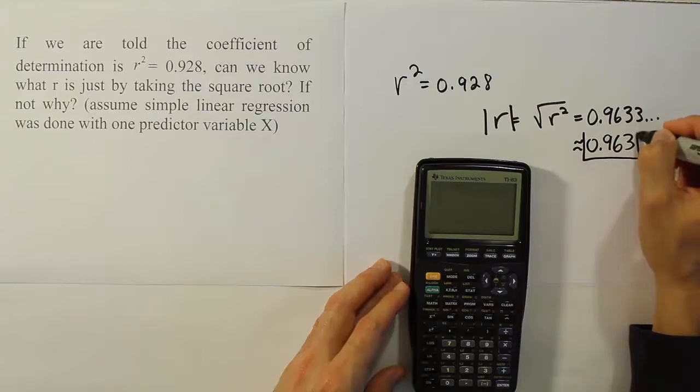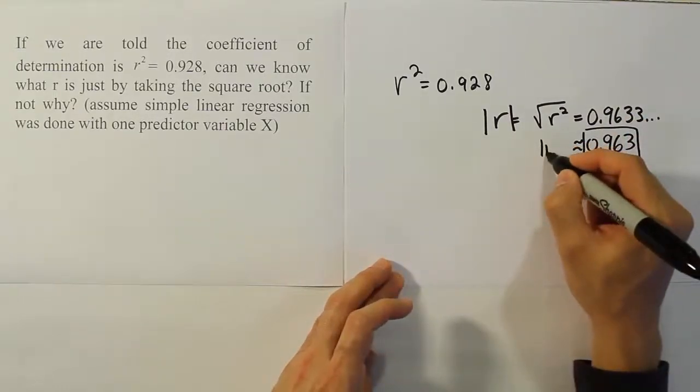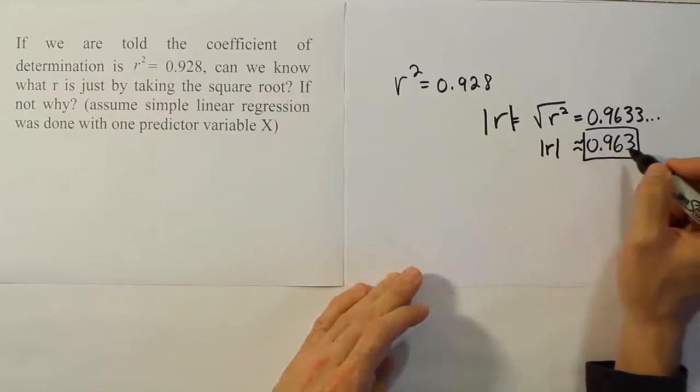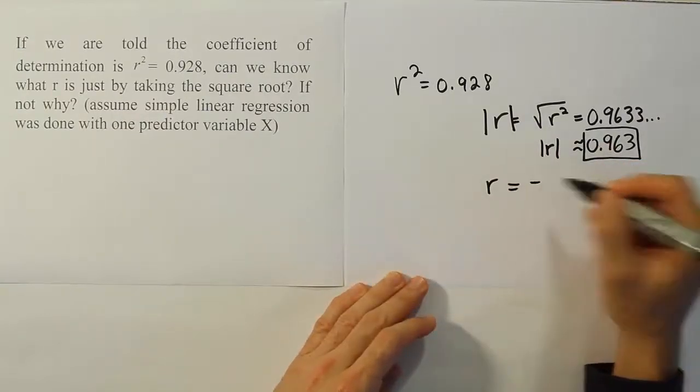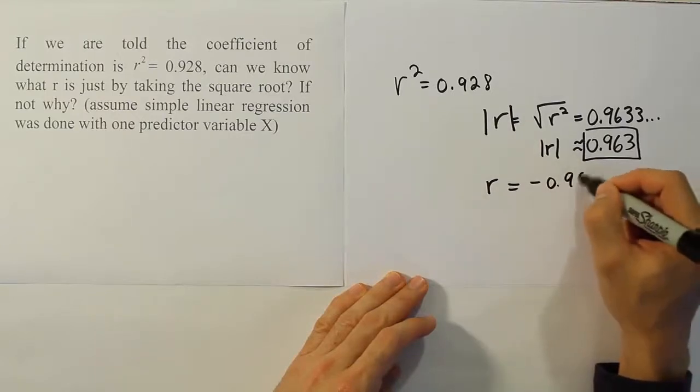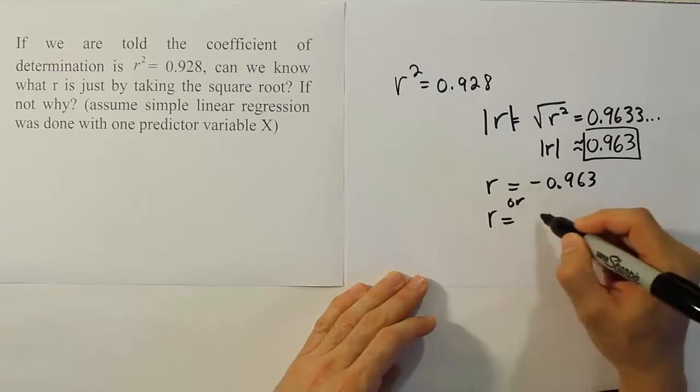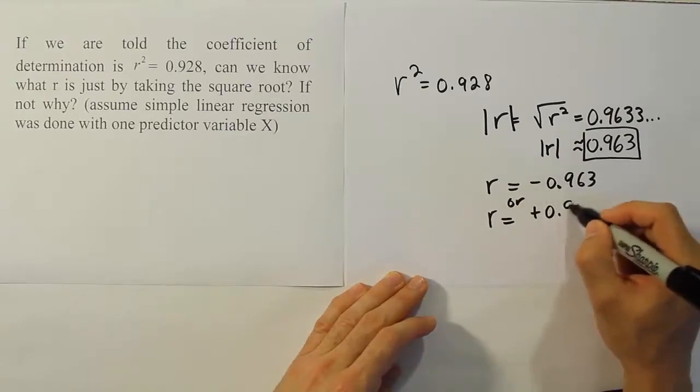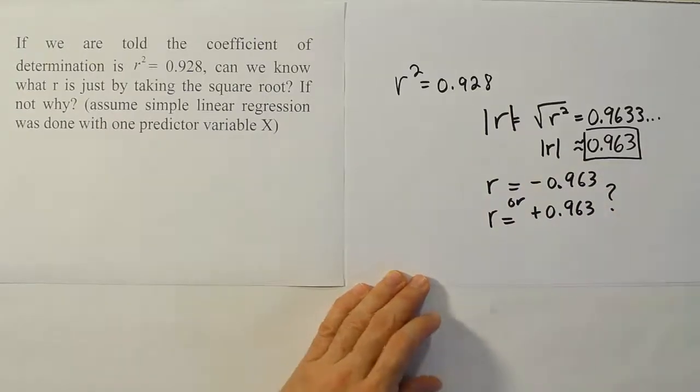So approximately 0.963. Okay, so we know that the answer for absolute value of r is 0.963. But we don't know if r is equal to negative 0.963 or if r is equal to positive 0.963. That's a mystery.